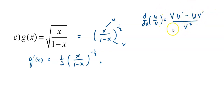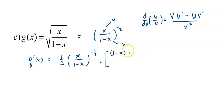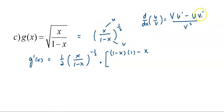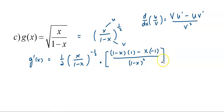Applying the quotient rule to differentiate the inside function: first copy down v, which is (1-x), then differentiate x with respect to x — you get 1. Then minus: copy down u, which is x, and differentiate v with respect to x — you get negative 1. All over v squared, which is (1-x) squared.